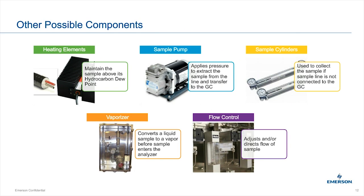Other components include heating elements — for C6+ applications in most of the US you'll need heat tracing and possibly a heater in the enclosure to maintain your position on the phase diagram. Sample pumps may be needed if you don't have enough pressure to get the sample from the probe to the GC over long tubing distances. Sample cylinders are available for grab samples — we can make recommendations. Vaporizers convert liquid to gas for liquid sample analysis; you need to be careful about volume going in, as too much means not all liquid will vaporize, and fractionation can occur.